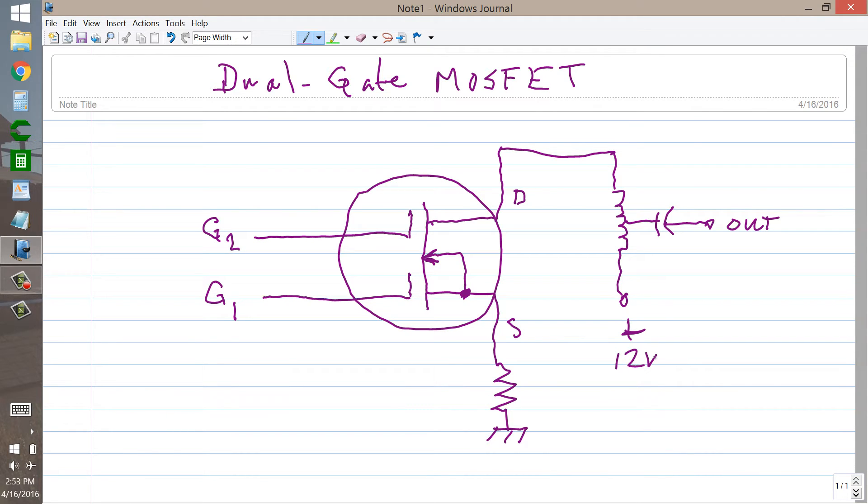And then to a positive source of DC voltage, say 12 volts. Now the gates are negatively biased, so they're going to have to use blocking capacitors like this. Let's call this input 1, let's call this input 2.